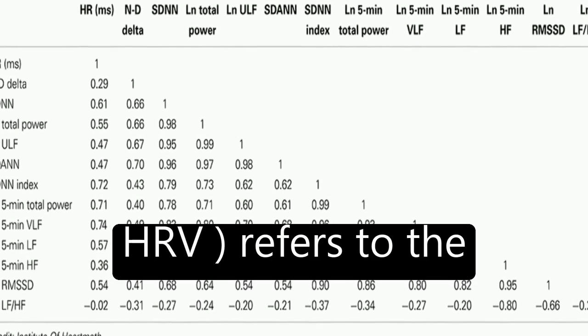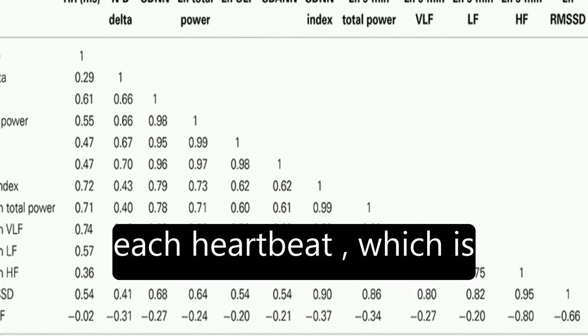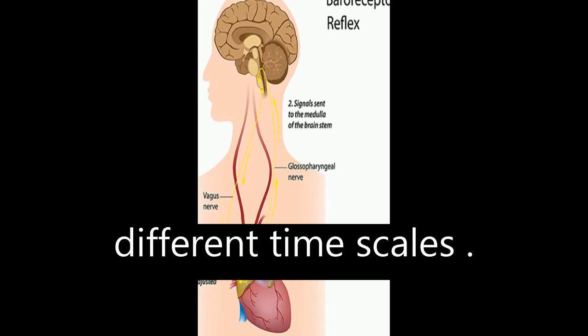Heart rate variability, or HRV, refers to the variation in time between each heartbeat, which is influenced by multiple interdependent regulatory systems operating on different time scales.